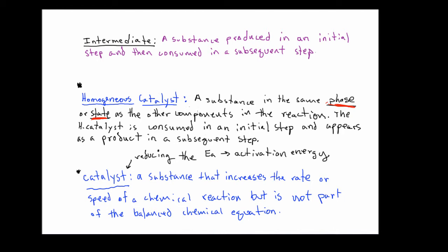Now, how do we tell the difference between a homogeneous catalyst and an intermediate? Well, in the case of the catalyst, the actual substance appears as a reactant in an initial step, and then it appears as a product in a subsequent step, and the net result is when you add those steps together to determine the overall balanced equation, you're also going to see the homogeneous catalyst cancelled out.